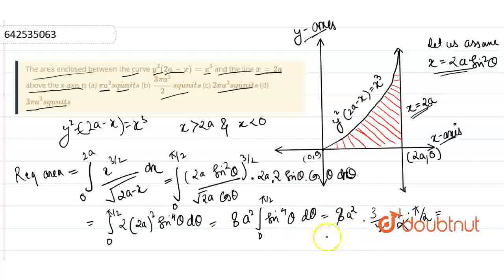So this is going to be 3a²π/2 square units, which means option B is the right answer.